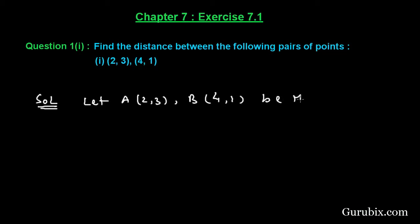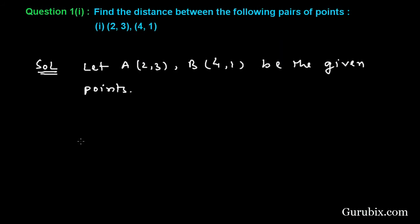Therefore we shall apply the distance formula: AB equals square root of (x2 minus x1) square plus (y2 minus y1) square. This means (4 minus 2) square plus (1 minus 3) square.